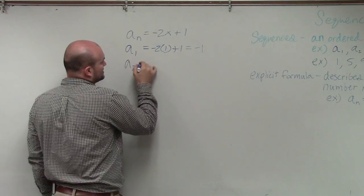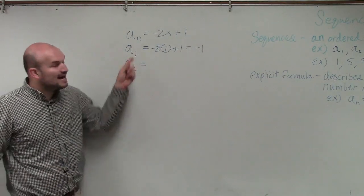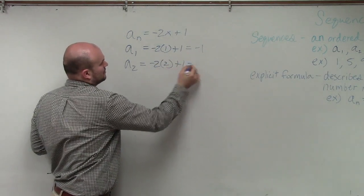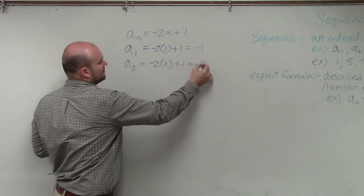Then we move to the second term of the sequence. Now we're replacing n with 2. Negative 2 times 2 plus 1 equals negative 3.